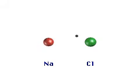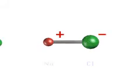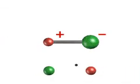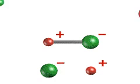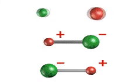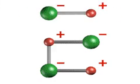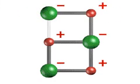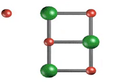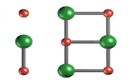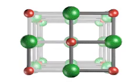When sodium and chlorine react, the sodium transfers an electron to the chlorine, forming oppositely charged ions. Although the compound has no net charge, its component ions of opposite charge attract each other to form ionic bonds.